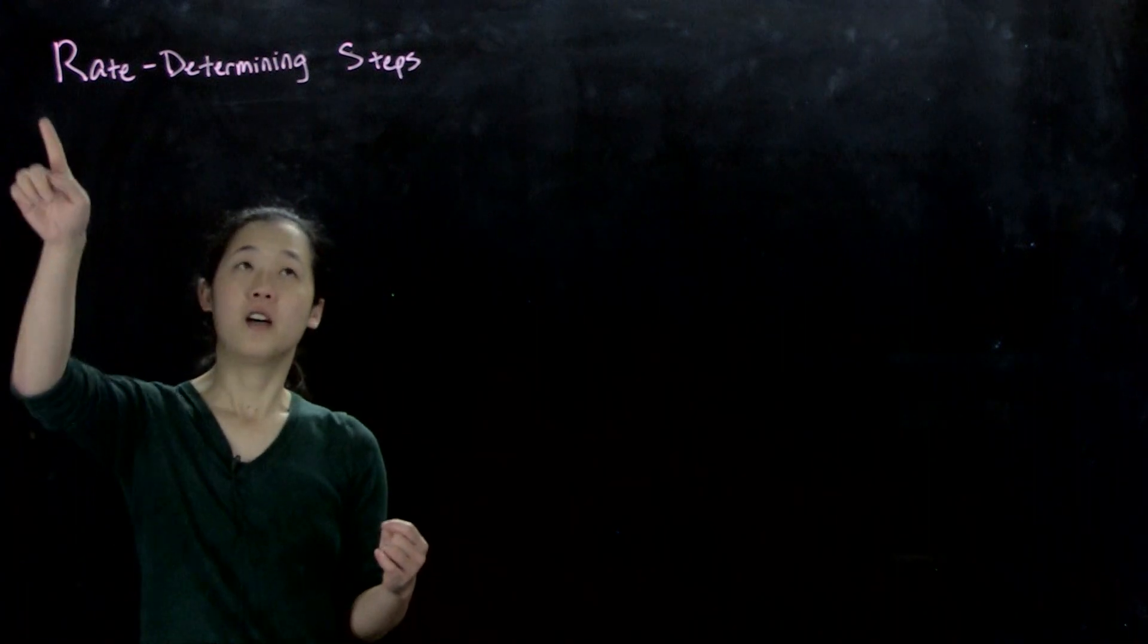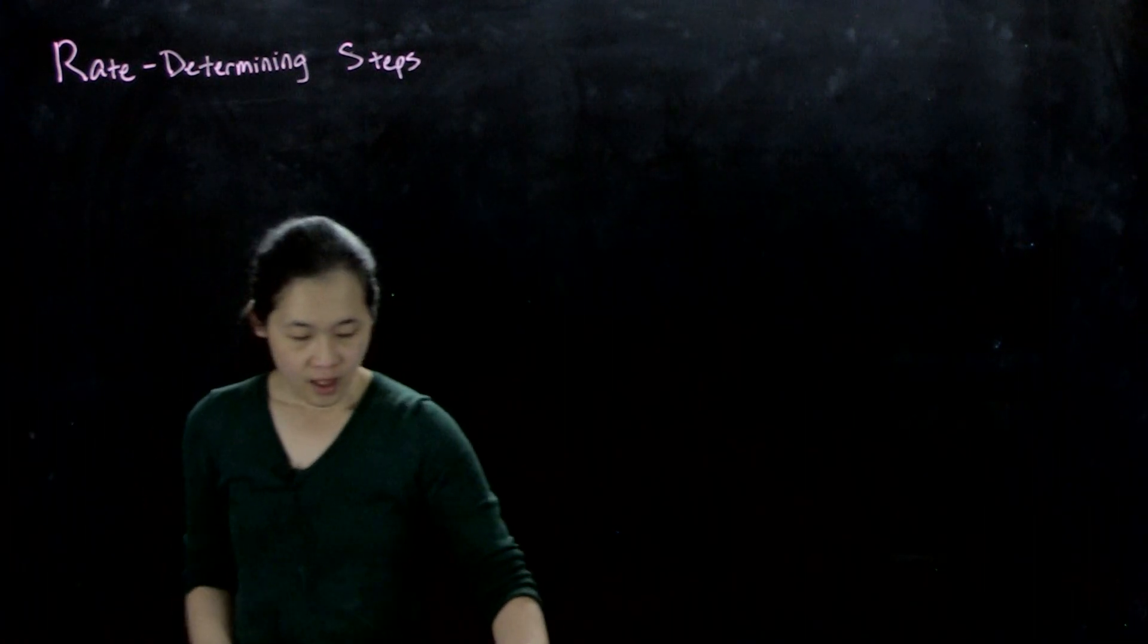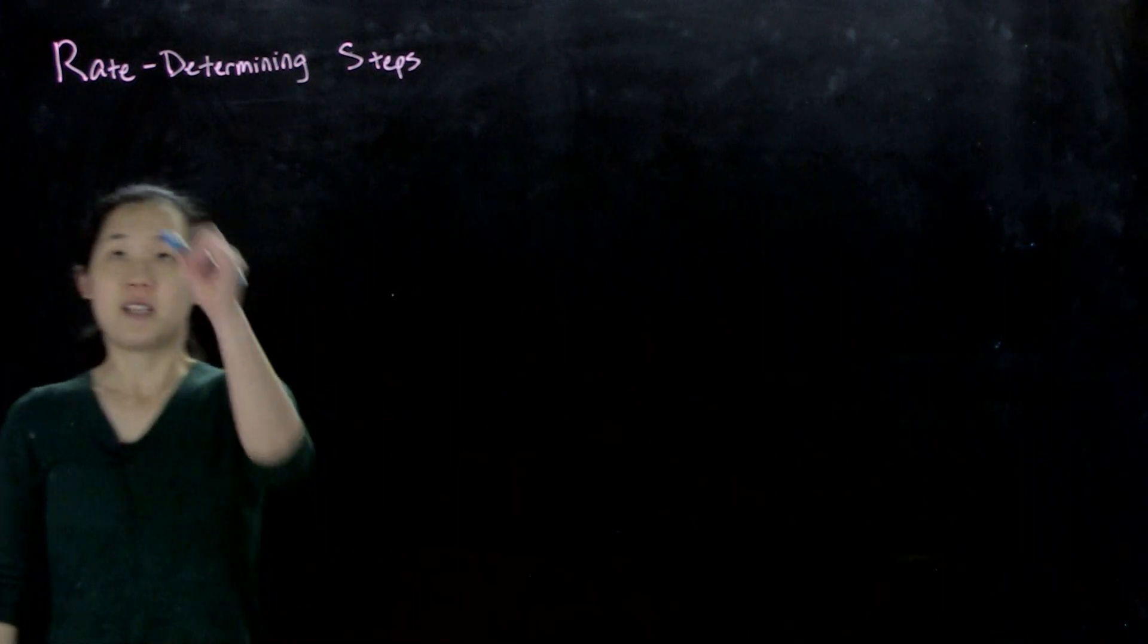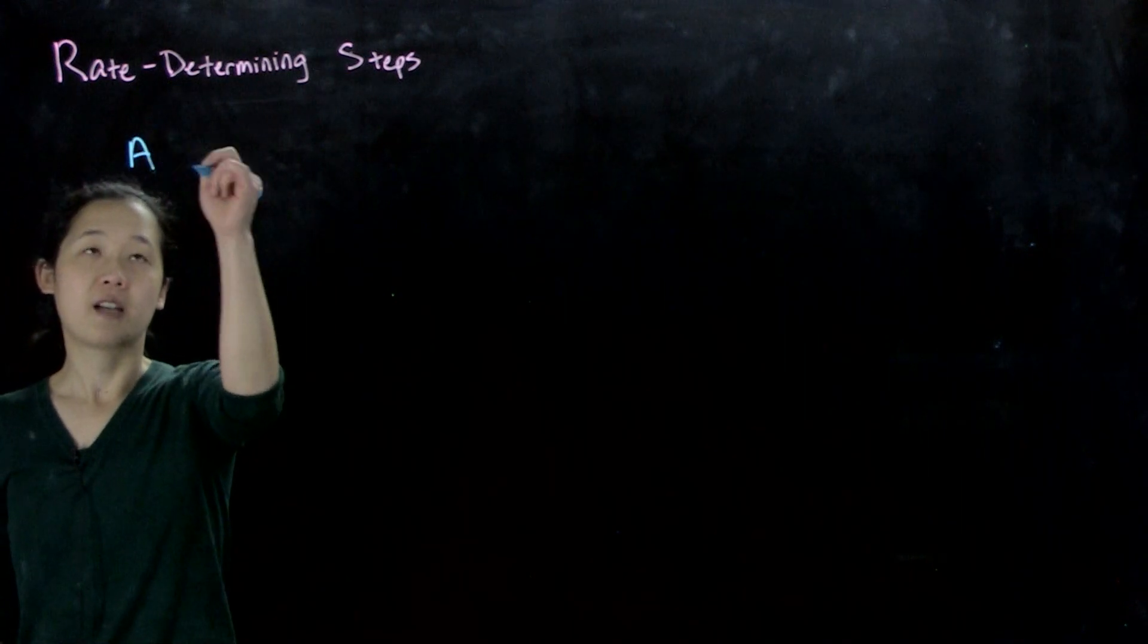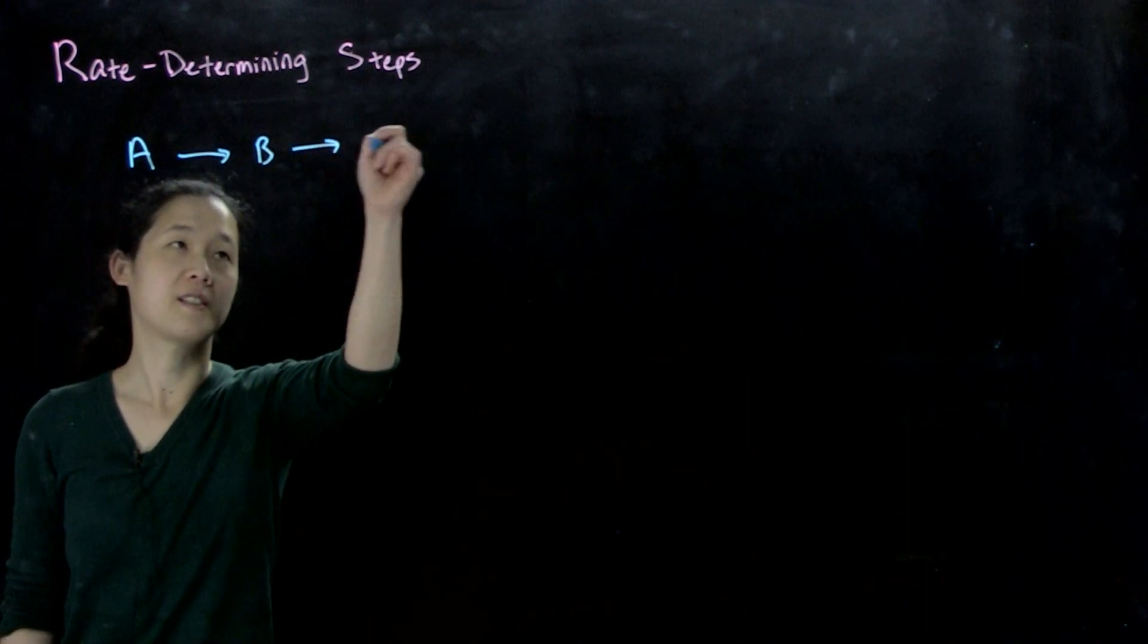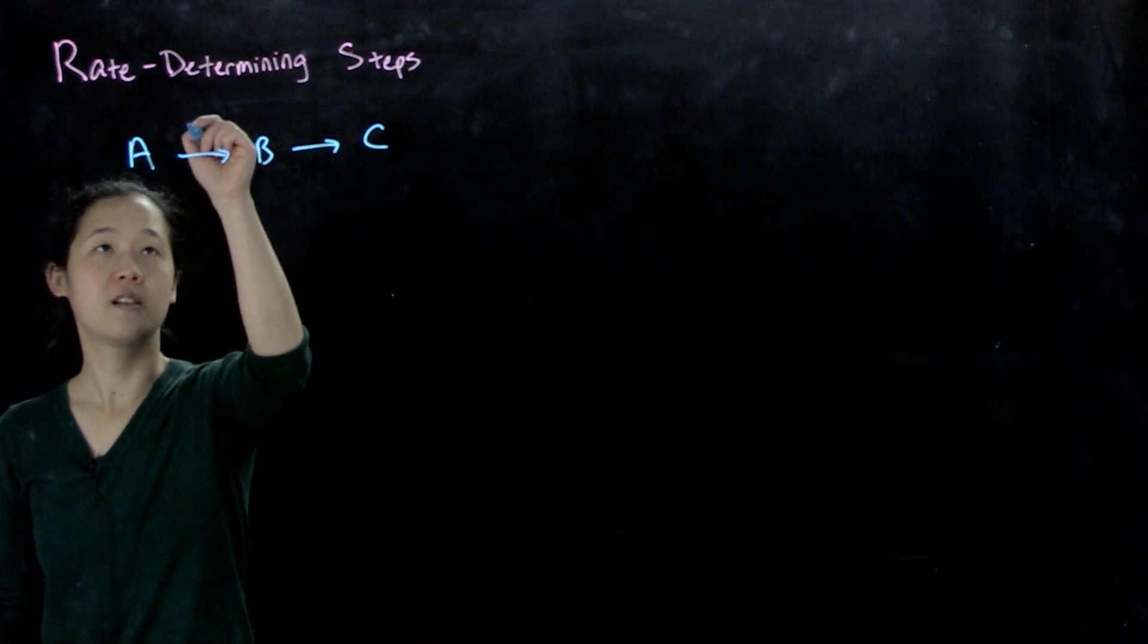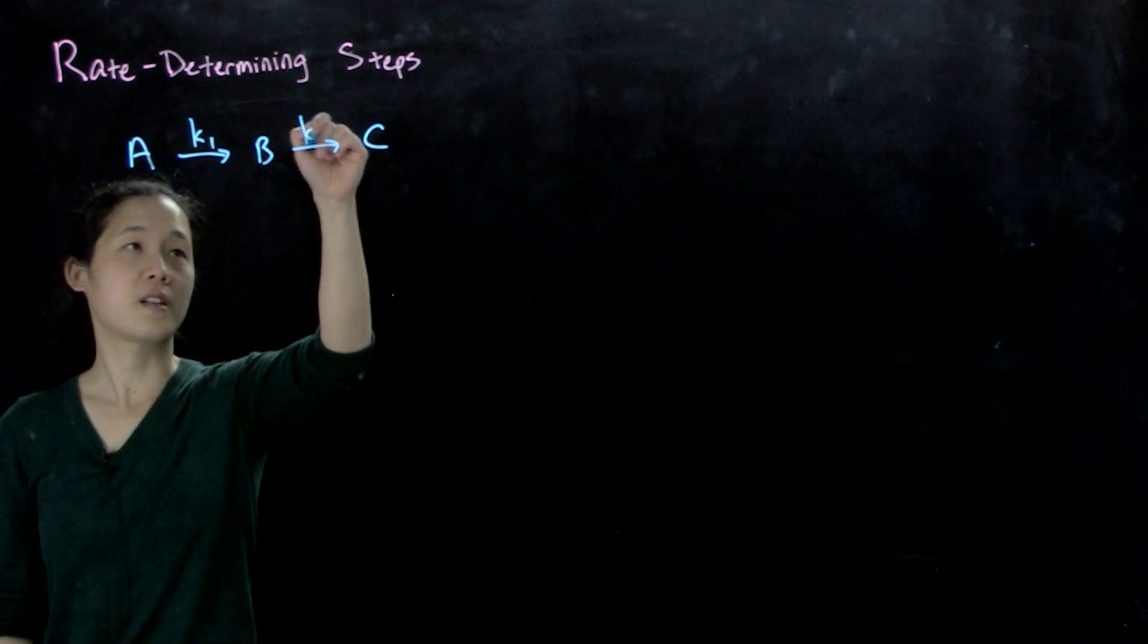So often you'll have what's called a rate determining step. So what I mean by that is, if we have a reactant A that converts to B that converts to C, a simple two-step reaction with K1 and K2.